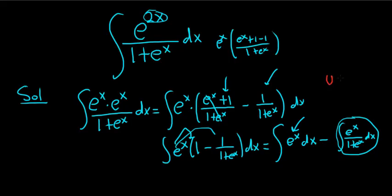This bad boy is also pretty simple. All you do is you let u equal 1 plus e to the x, and then so du becomes e to the x dx. Boom, there it is.